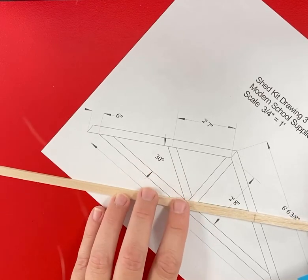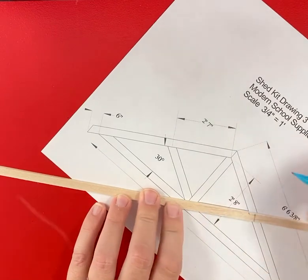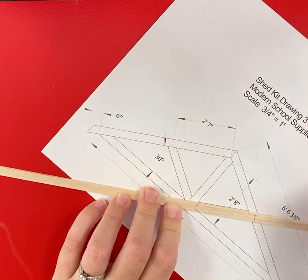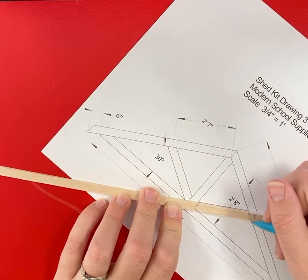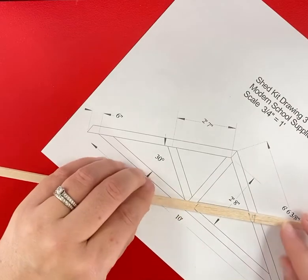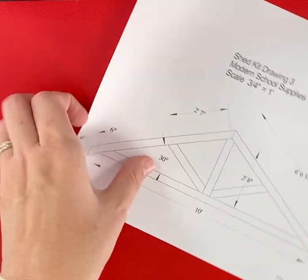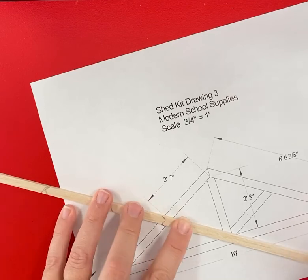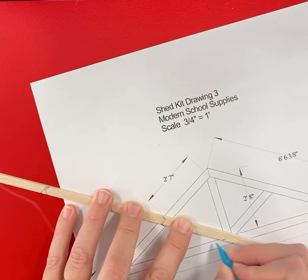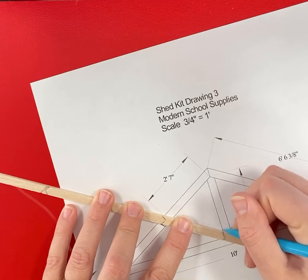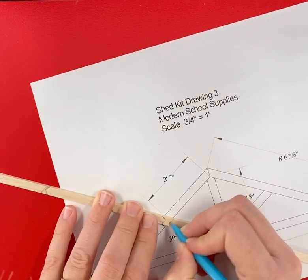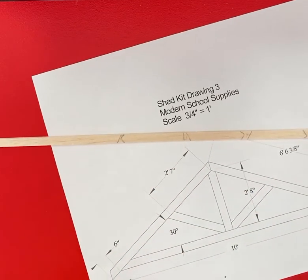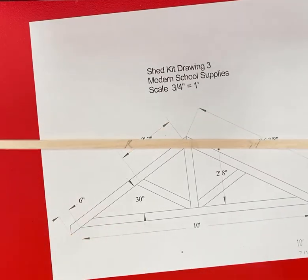Just make sure every time you cut, you're cutting to the outside of your line. All right. So I scribed it all out and then I would need to obviously cut it out.